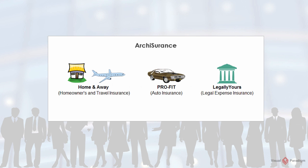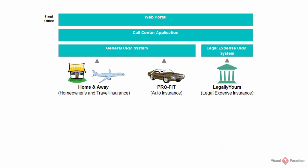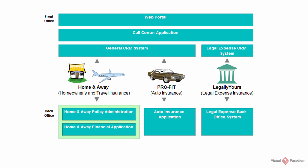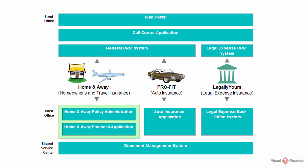The case study concerns the insurance company ARCHISURANCE, which has been formed as a result of a merger of three previously independent companies: Home and Away, specializing in homeowners and travel insurance; Profit, specializing in auto insurance; and Legally Yours, specializing in legal expense insurance. After the merger, ARCHISURANCE set up a French office as a multi-channel contact center for sales and customer service. The French office is responsible for maintaining the web portal, call center application, a CRM system for homeowners, travel and auto insurance customers, and another CRM system for legal expense insurance customers. There are still three separate back offices maintaining separate back office applications for their corresponding lines of business. A shared service center has been established for document processing.